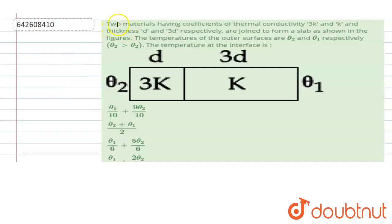Hello, the problem states that two materials having coefficient of thermal conductivity 3k and k and thickness d and 3d respectively are joined to form a slab as shown in the figure.